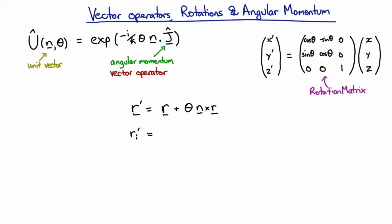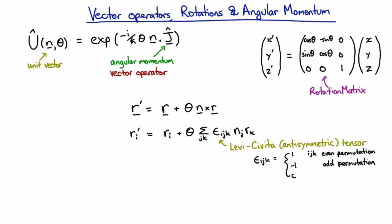The i-th component of this vector is equal to the i-th component of the original vector plus the i-th component of this cross product. The i-th component of the cross product can be written as sum over j and k: epsilon_ijk n_j r_k. This tensor epsilon_ijk is called the Levi-Civita or antisymmetric tensor. It is 1 if i, j, k is an even permutation of 1, 2, 3, minus 1 if they're an odd permutation, and all other components are 0.